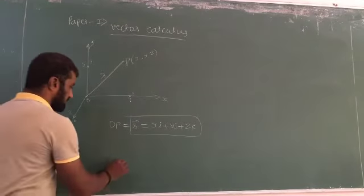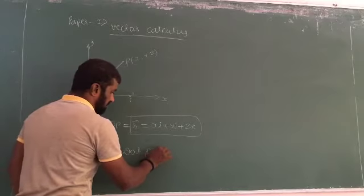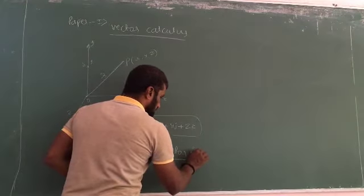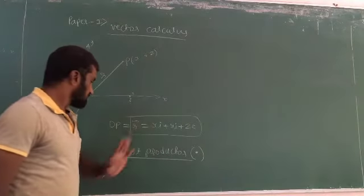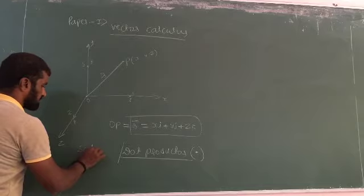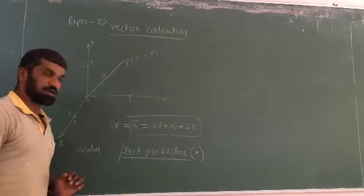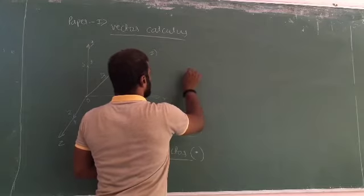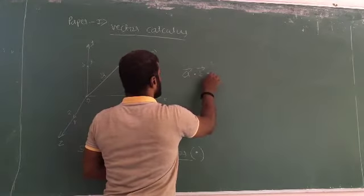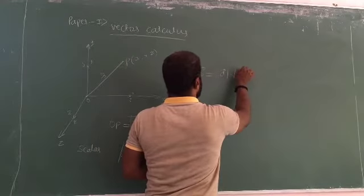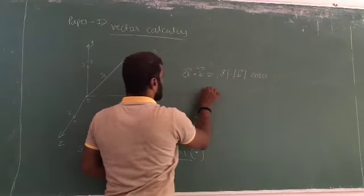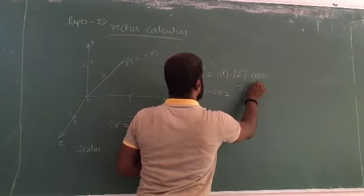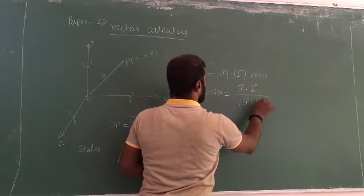Next is the dot product, symbolically denoted by a dot. This is the scalar product. The formula for the scalar product or dot product is: vector A dot vector B equals the magnitude of A times the magnitude of B times cos theta. Therefore, cos theta equals A dot B divided by the magnitude of A times the magnitude of B.